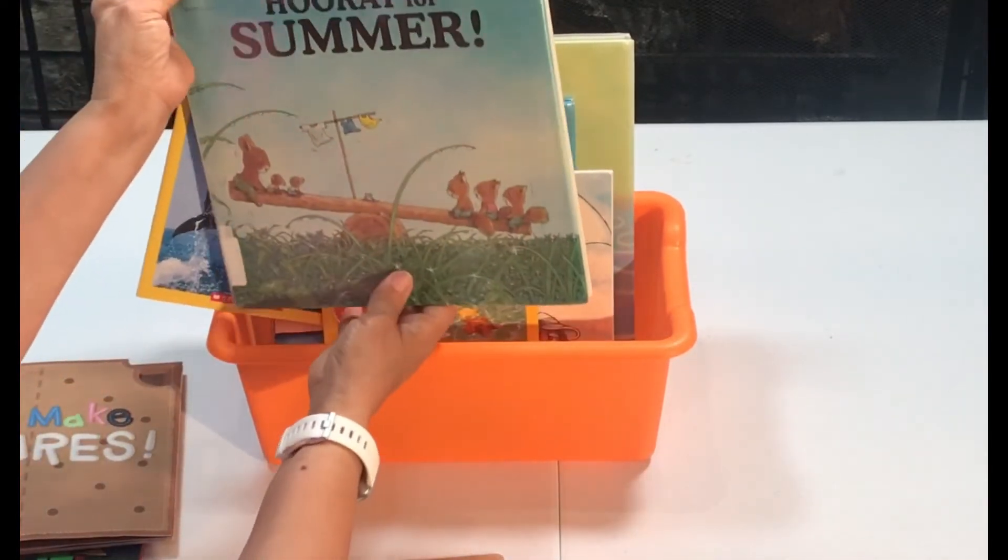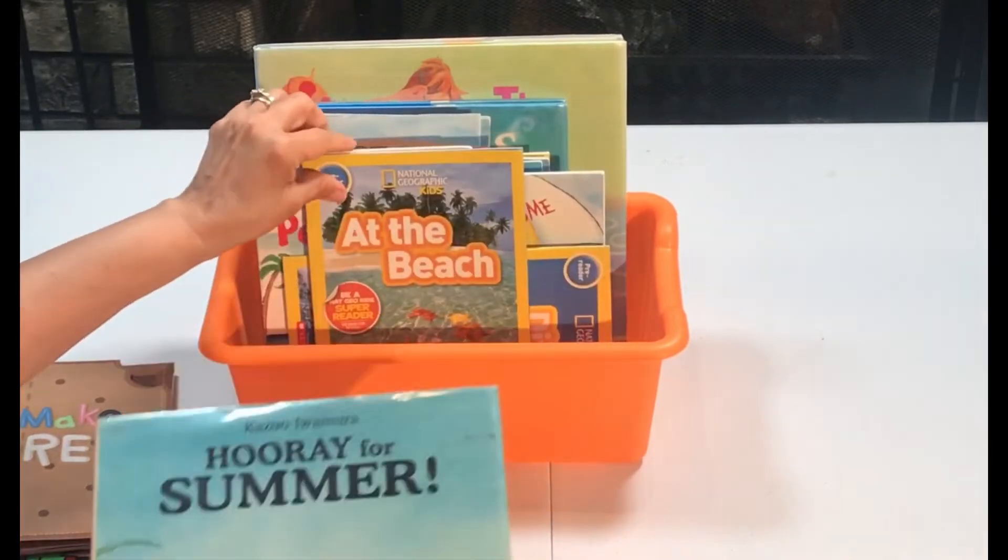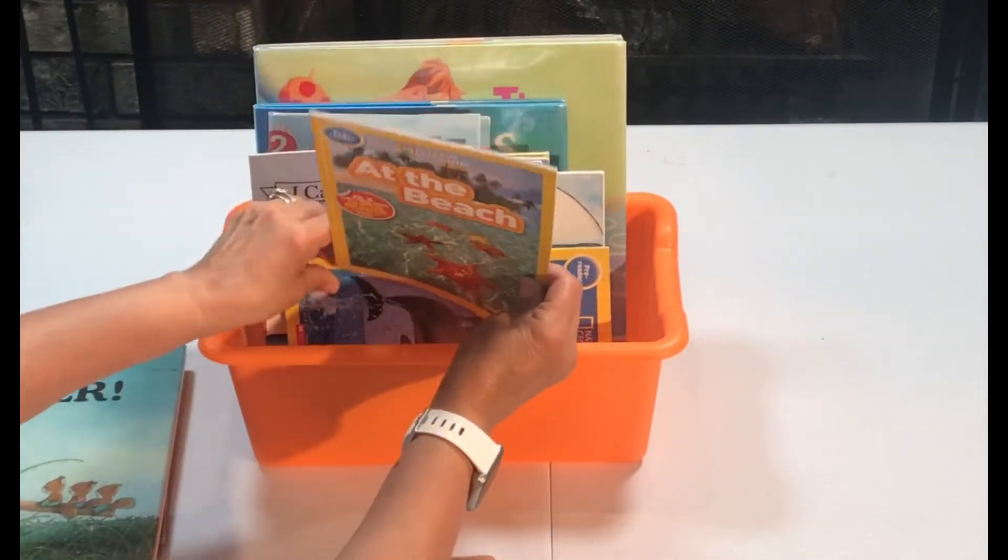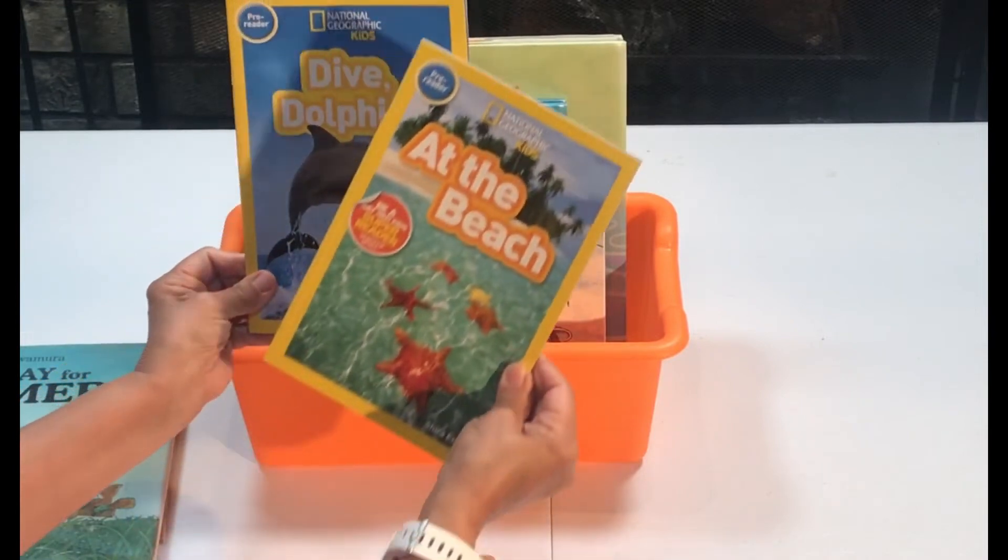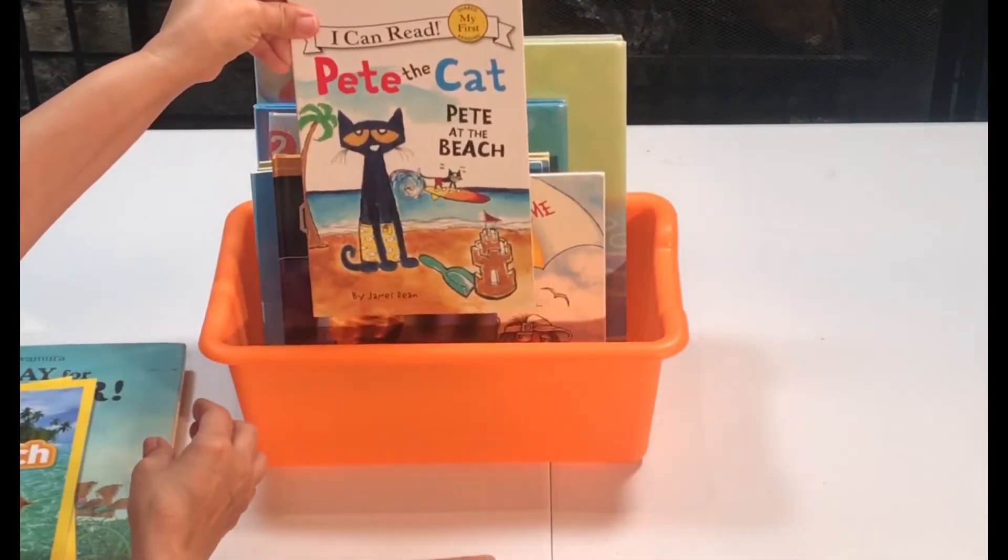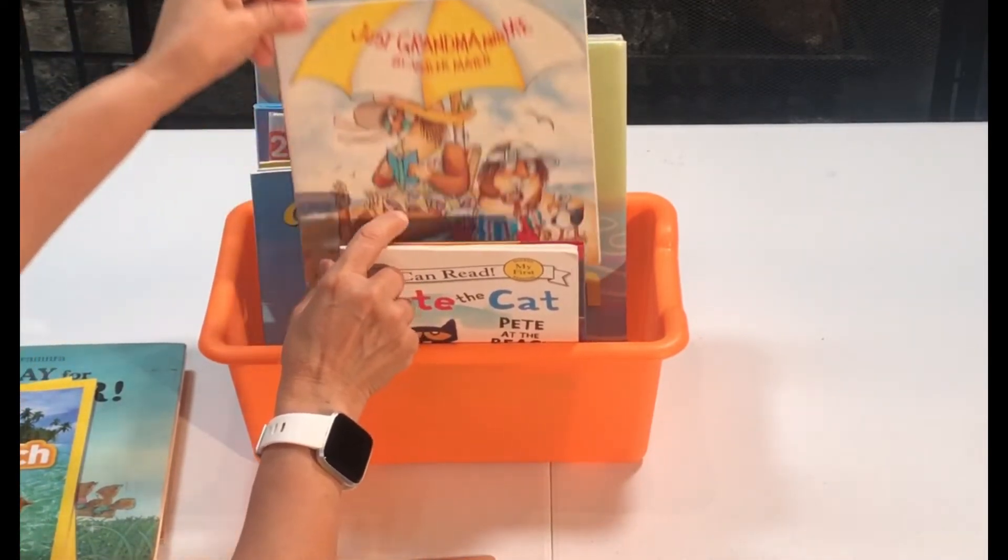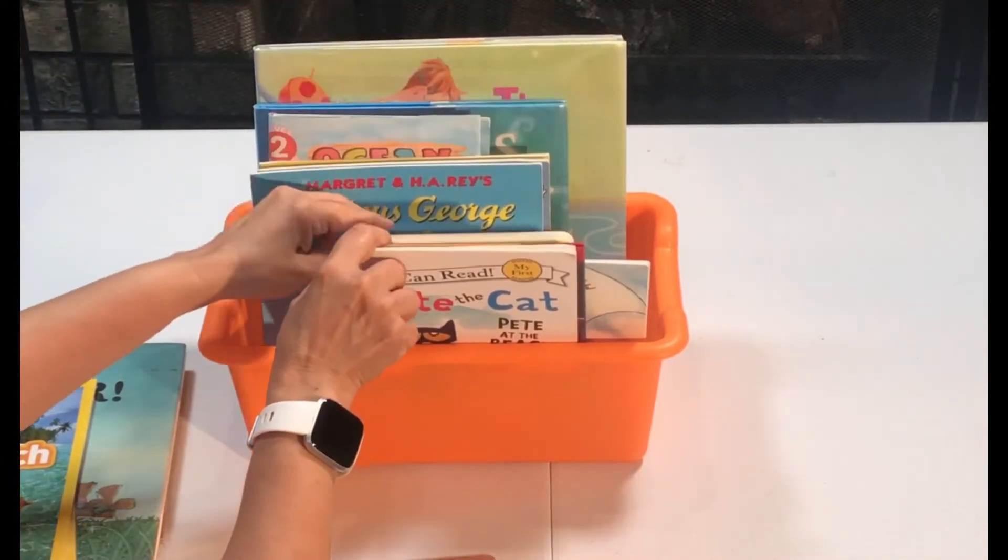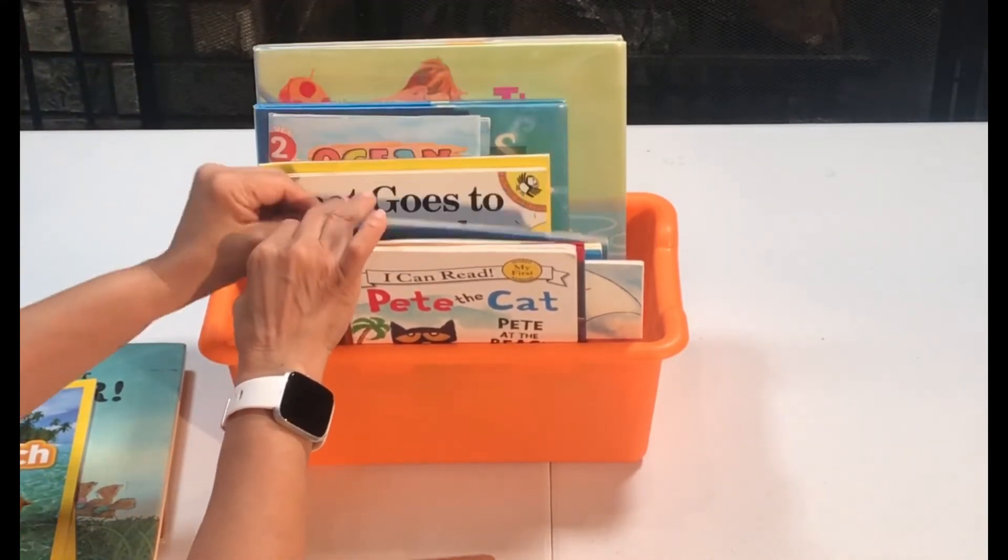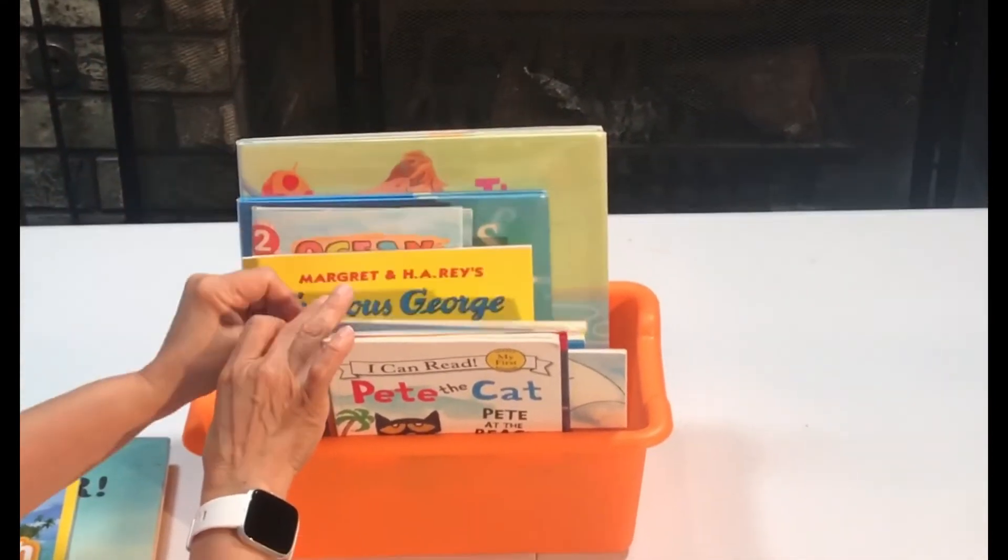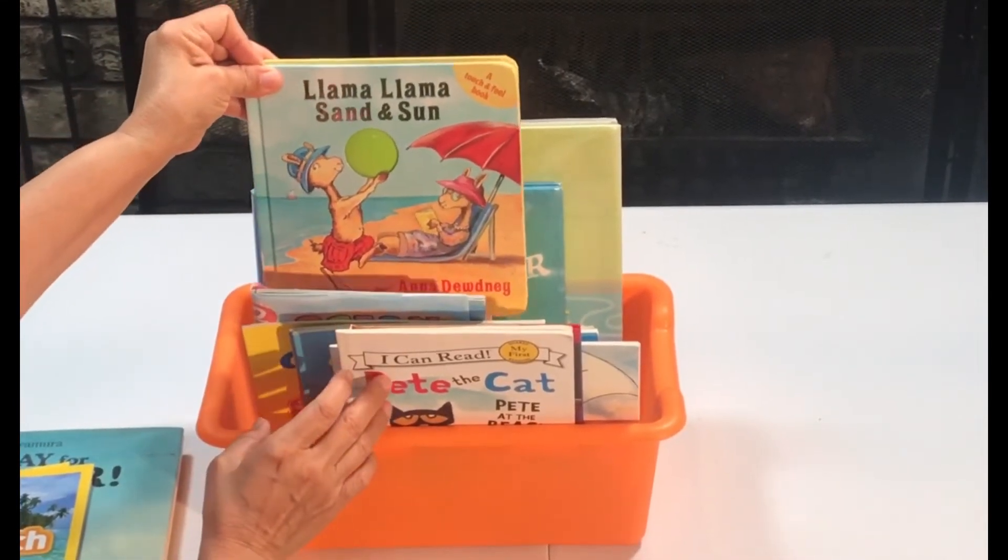This one is Hooray for Summer from the library. I always like to have a couple of non-fiction books. I have At the Beach and Dive Dolphins. Pete the Cat at the Beach. Ocean Life from Dollar Tree. Little Critter Just Grandma and Me, Curious George, Clifford, Spot Goes to the Beach. Lots of cute books. This is a great way to introduce new vocabulary.